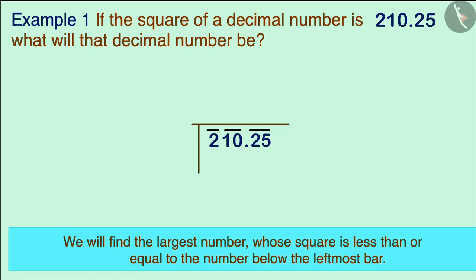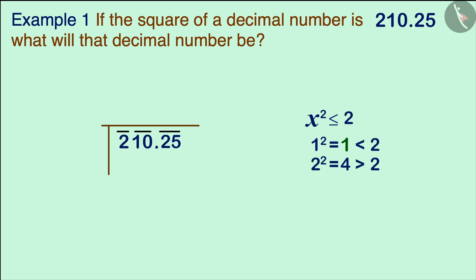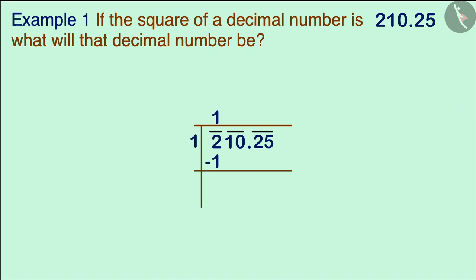For the first digit of the square root, we find the largest number whose square is equal to or smaller than the number below the leftmost bar, which is 2. Since the square of 1 is 1, which is smaller than 2, that number is 1 — the first digit of the quotient. Taking 1 as the divisor and the number below the leftmost bar as dividend, we subtract the square of 1 and the remainder is also 1.